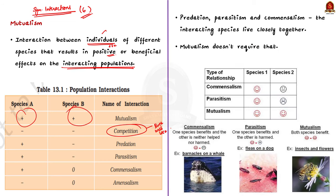In both parasitism and predation, only one species benefits — that is the parasite and predator respectively. This interaction is detrimental to the other species, which is the host and prey respectively. Classic examples for parasitism include interaction between vertebrate hosts and tapeworms, flukes, malaria-causing Plasmodium species, and fleas.